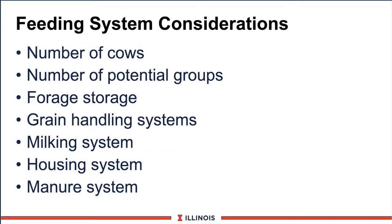When we look at feeding systems, there are a number of considerations that will vary from farm to farm. First, the number of cows — there are certain things we can't do with 100 cows that we can do with 1,000 cows. Second, how many potential groups do we have on the farm? This will determine how we may put feeds together. Thirdly, the type of forage storage — for example, if a farmer is only feeding baled hay, this certainly limits some of our feeding system considerations.